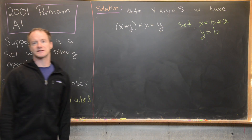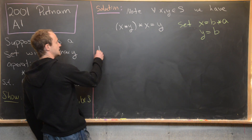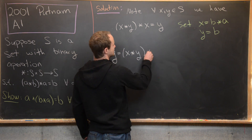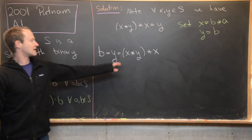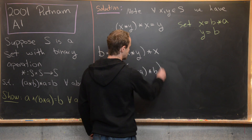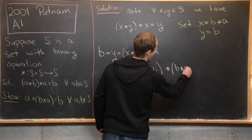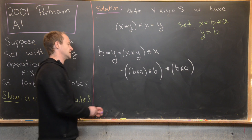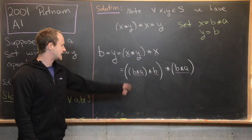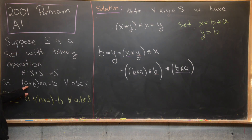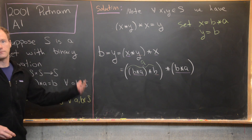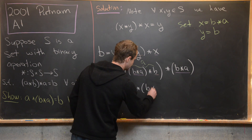Starting from the left-hand side: Y is now B, so B = Y = (X★Y)★X by our given. Substituting in, that's ((B★A)★B)★(B★A). Now we can use the given on the inside expression, where A and B have just been switched — so (B★A)★B = A by the given. We're left with A★(B★A).